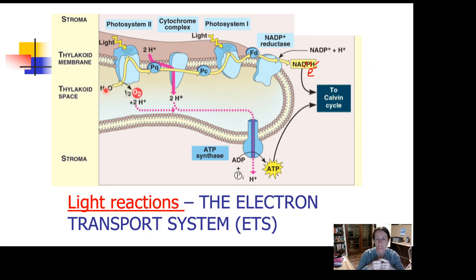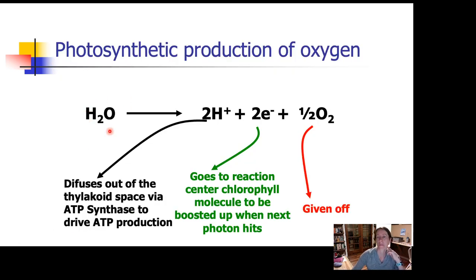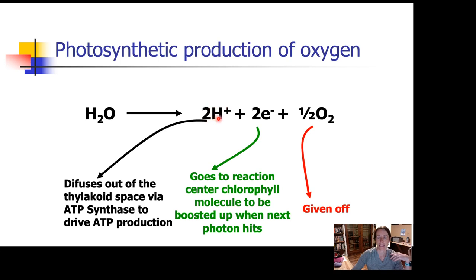The other part of the water molecule, once it's been disassembled, is some hydrogen ions, and you can see those here. When you have water inside the thylakoid, the water is ripped apart by photosystem 2. Some electrons are extracted that go to the chlorophyll to make up the ones they've lost. Some oxygen is created — that's the waste that's given off. And also a couple of hydrogen ions are released, and those are going to hang out in the thylakoid right now.